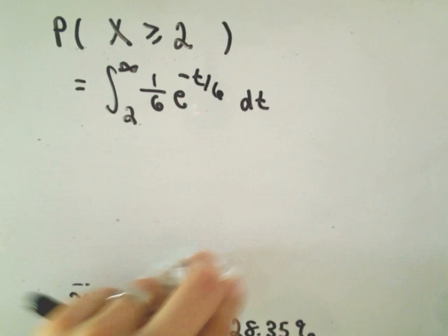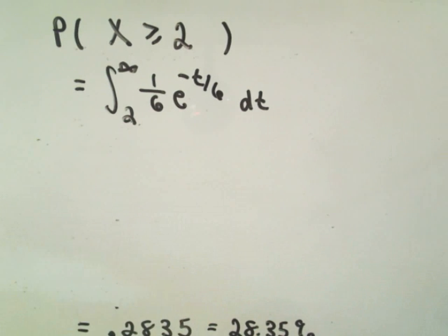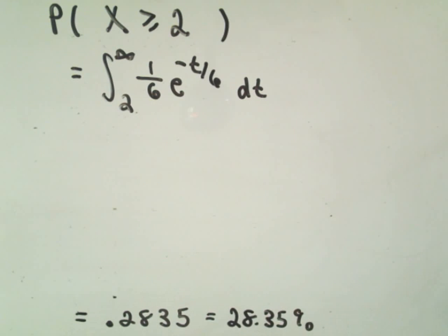Intuitively though, without doing all of the arithmetic, you know, if the probability that our phone call is answered in the first two minutes is 28.35%, without doing anything, I can say, well, the probability I guess that I wait two or more minutes must be,